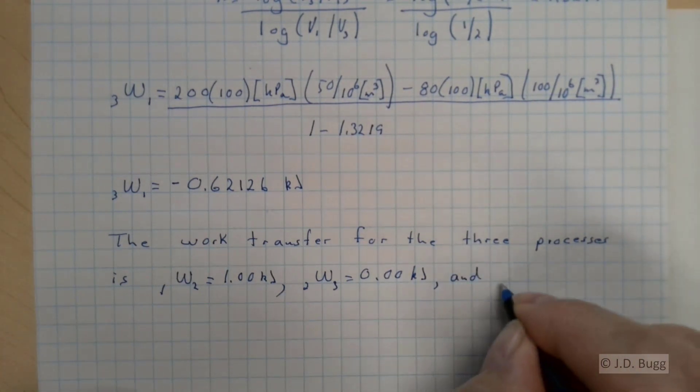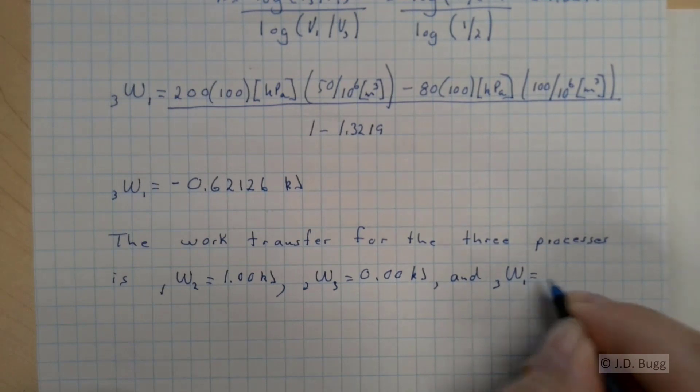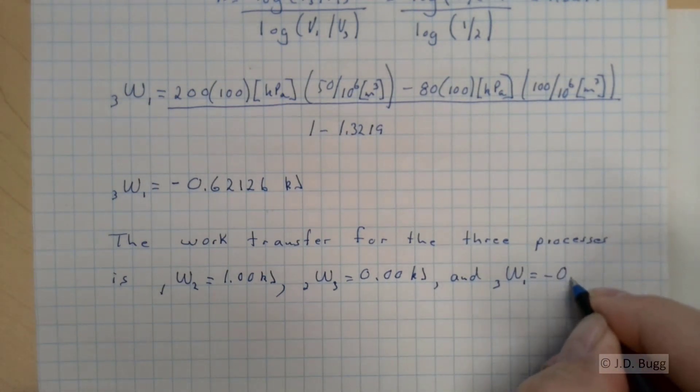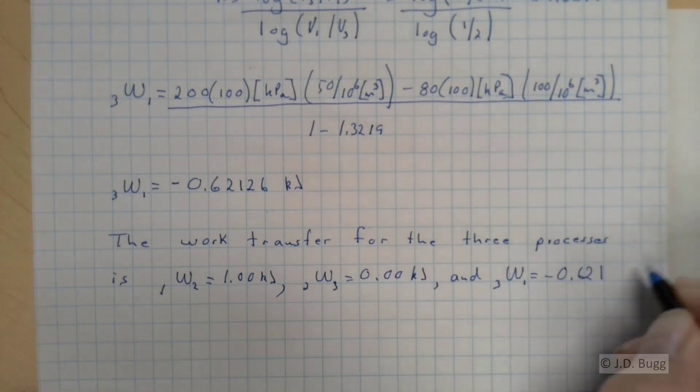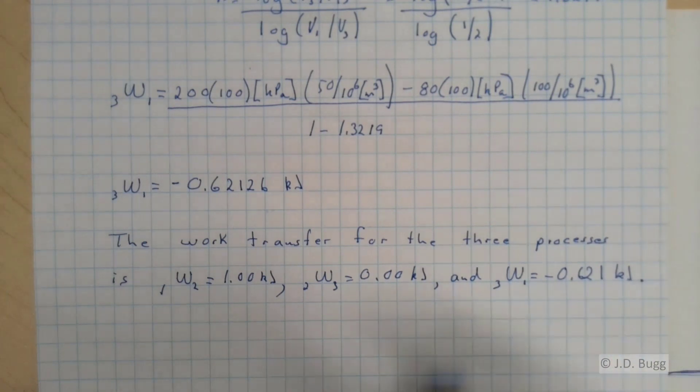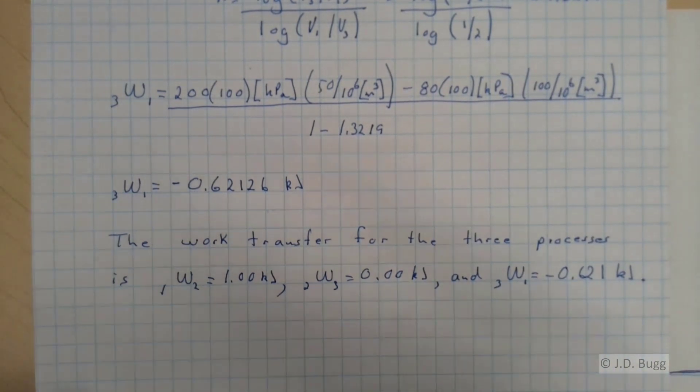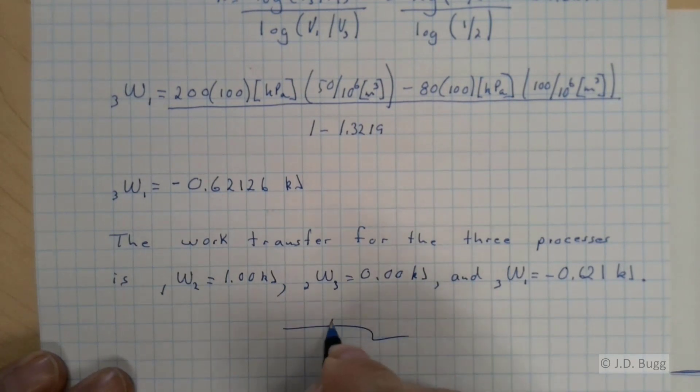And finally, the work from 3 to 1 is equal to negative 0.621 kilojoules. So all expressed to three significant figures. So that's the end of that example problem.